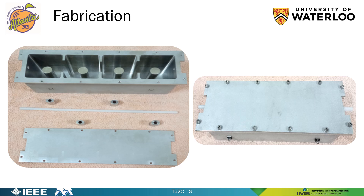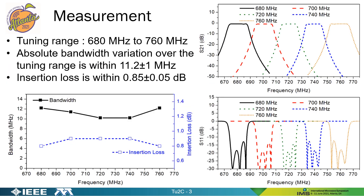We built the filter using aluminum parts and used a commercial plastic for the tuning rod. These are the measured results as the tuning rod is rotated. The tuning range is from 680 MHz to 760 MHz, over which the bandwidth variation is within ±1 MHz. Peak insertion loss is better than 0.9 dB over the entire tuning range.